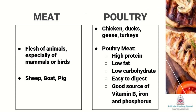Meat is a flesh of animal, especially of birds or mammals. The non-poultry meat consists of meat from sheep, goat and pig, whereas the poultry meat consists of meat from chicken, ducks, geese and turkeys. Poultry meat has some advantages over non-poultry meat such as high protein content, low fat content, low carbohydrates, easy to digest, and also a good source of B vitamins, iron and phosphorus.